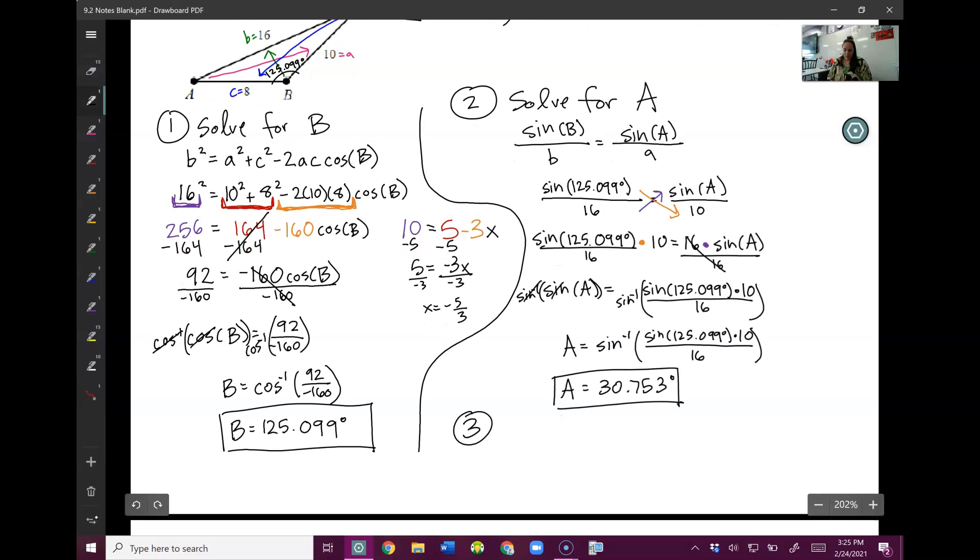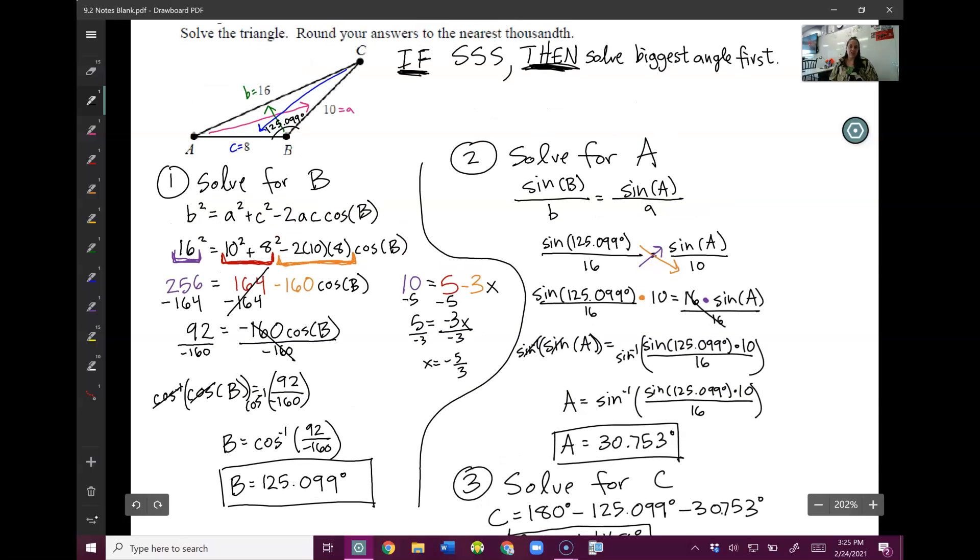Okay, last step. I know capital A. I know capital B. So the last thing I need to solve for is capital C. And I can use my 180 rule for that. Because I know two of the angles, I can subtract them from 180 to find the last angle. So I subtract those and I should get 24.148 degrees. And that is the last version of the law of cosines.